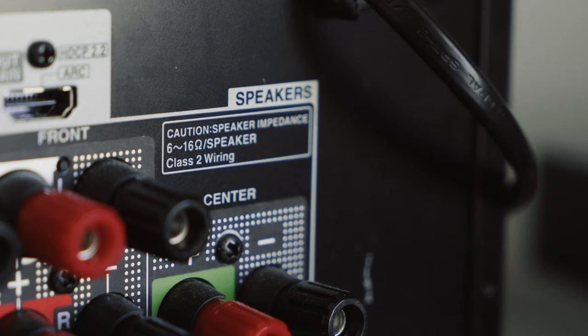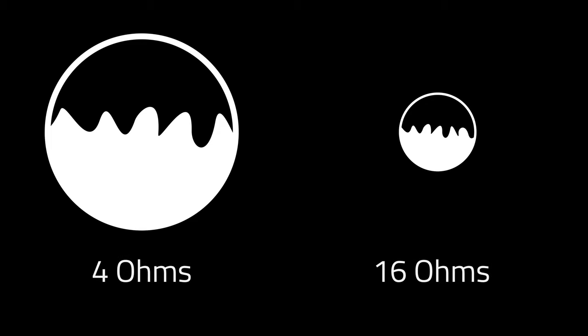Impedance is a rating given to both speakers and receivers, measured in ohms, usually in increments of two — 4 ohms, 8 ohms, 16 ohms, etc. The simplest way to understand impedance is to think of a hose: the lower the number, the bigger the hose, and the more signal that can flow through. The larger the number, the smaller the hose, and the less signal that can flow through.